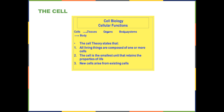We're going to start with the fundamental functions that all cells have to undergo. It's important to know that there's something known as the basic cellular theory, shown in this diagram. Cellular theory says that all living things are composed of cells — they can have one or more cells — but the cell is the smallest unit that contains the properties of life, which we talked about last week.